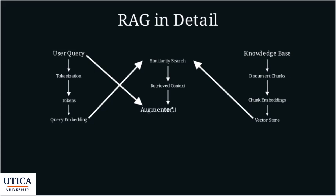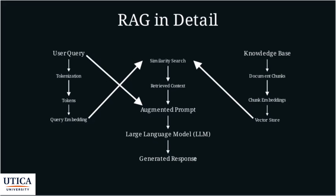The result is retrieved context — the chunks of information that are most similar to the user's query. The retrieved context is combined with the original user query to create an augmented prompt. Finally, the augmented prompt is fed into the large language model. The LLM uses the information in the augmented prompt to generate a more accurate and informed response.